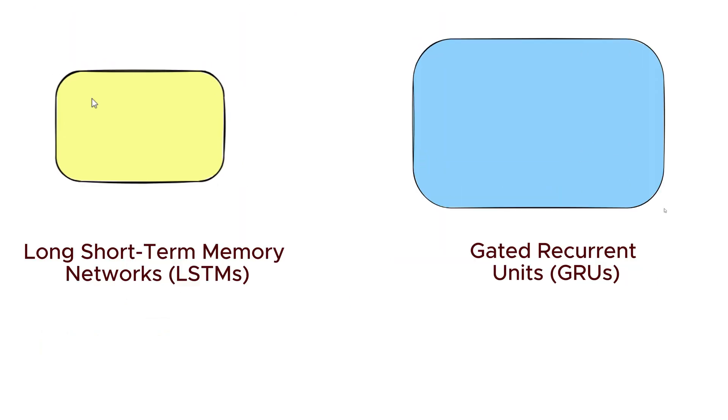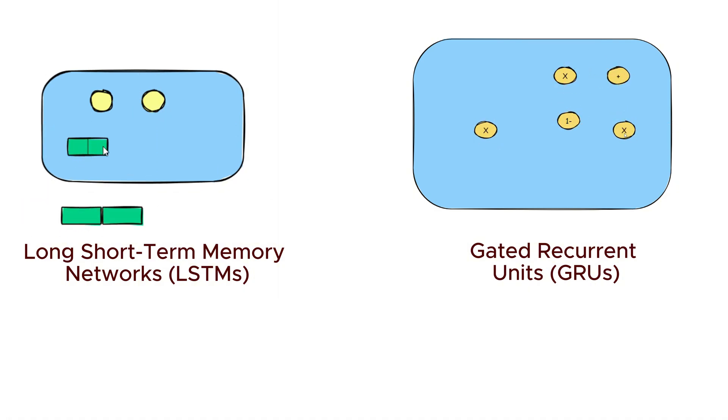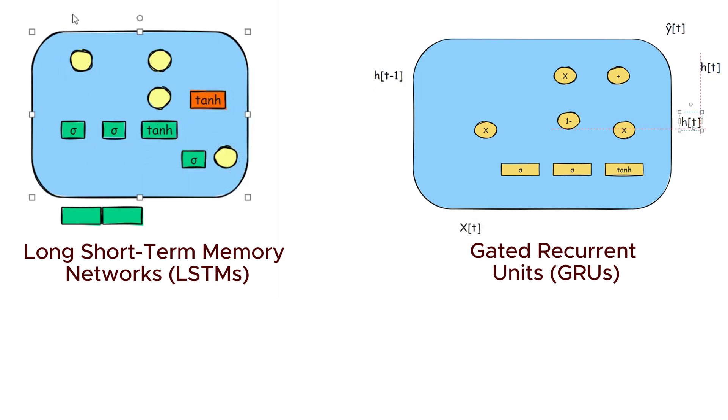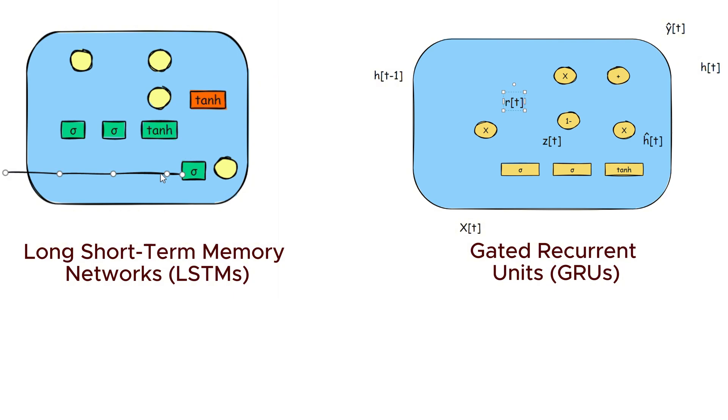Long Short-Term Memory networks or LSTMs and Gated Recurrent Units or GRUs. LSTMs and GRUs are specialized types of RNNs designed to handle the vanishing gradient problem which standard RNNs often face. LSTMs and GRUs achieve this by using gates to control the flow of information.